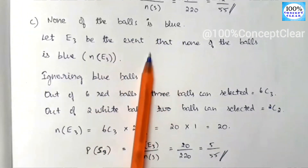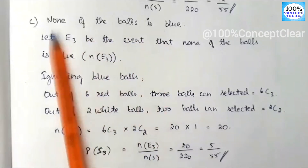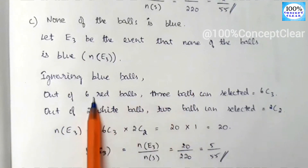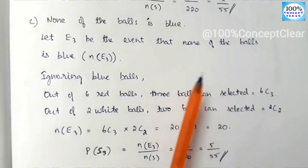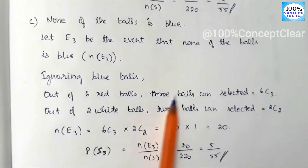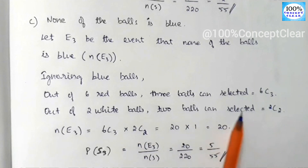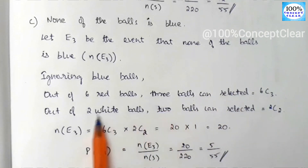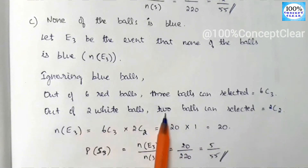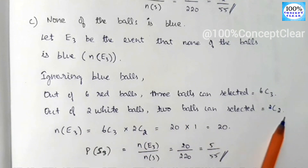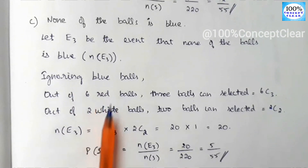We choose 3 balls from the red and white balls only, ignoring the 4 blue balls. Out of 6 red balls, 3 balls can be selected — that gives us 6C3. Out of 2 white balls, we choose the remaining — that gives 2C2. So n(E3) = 6C3 into 2C2.